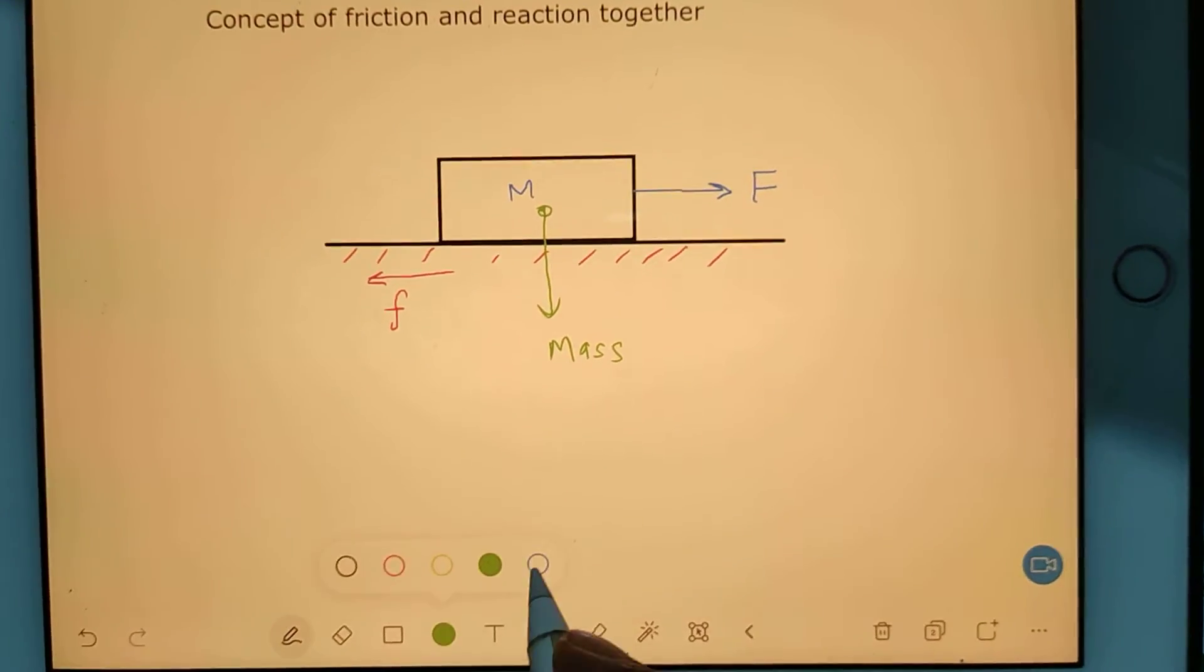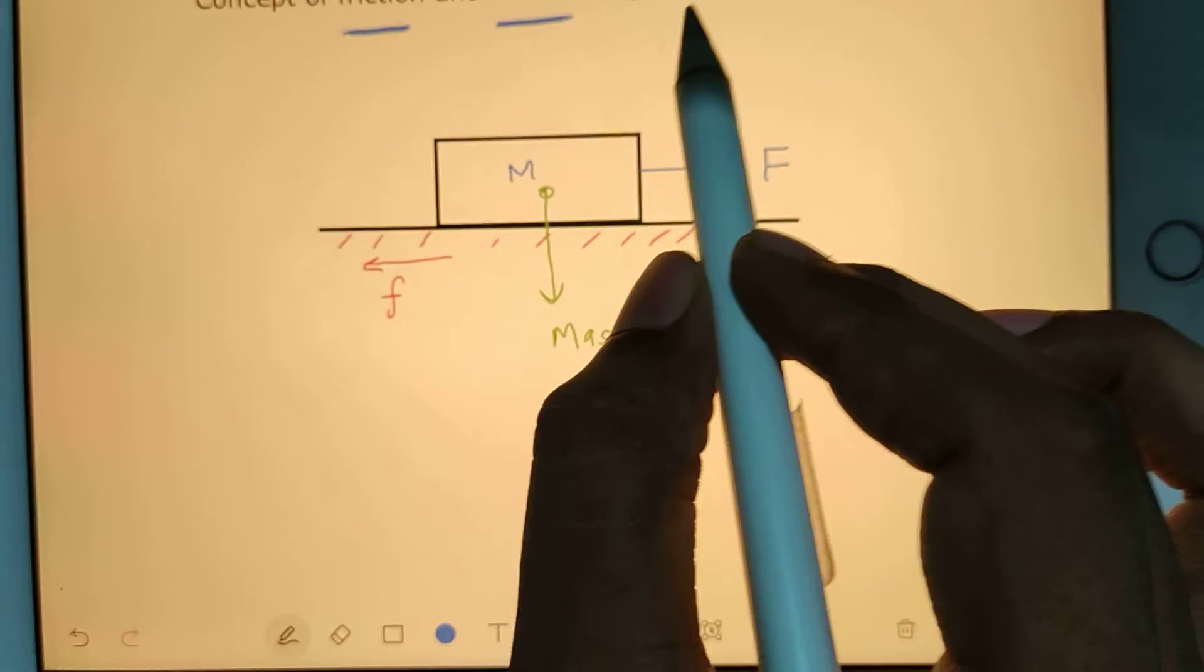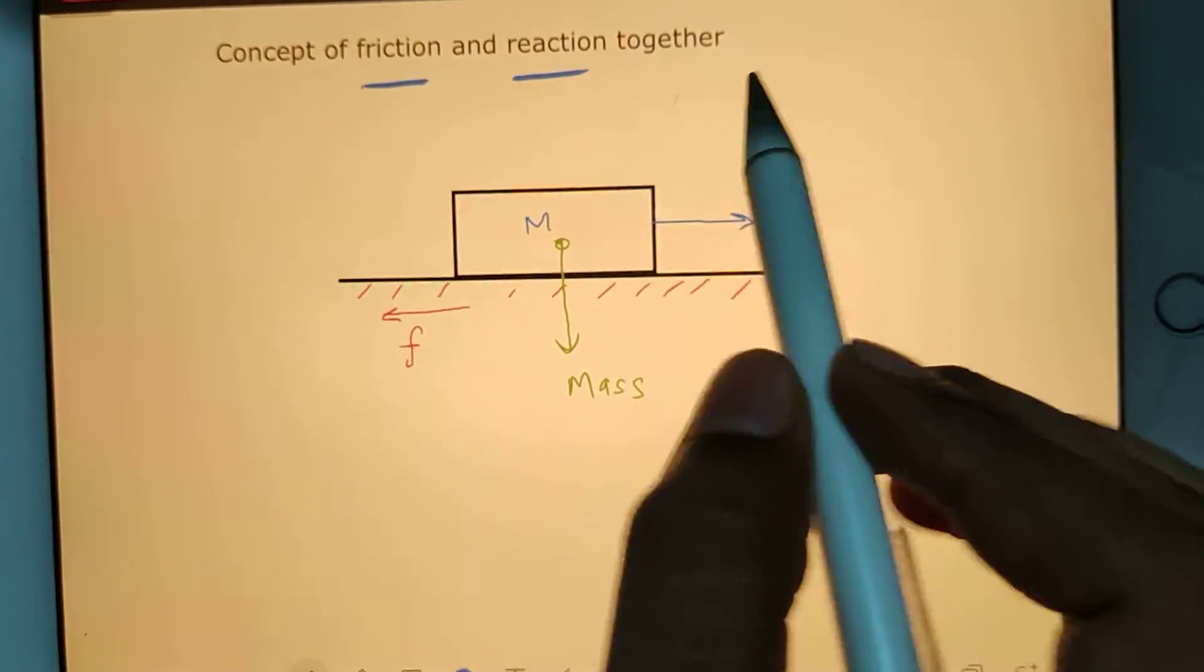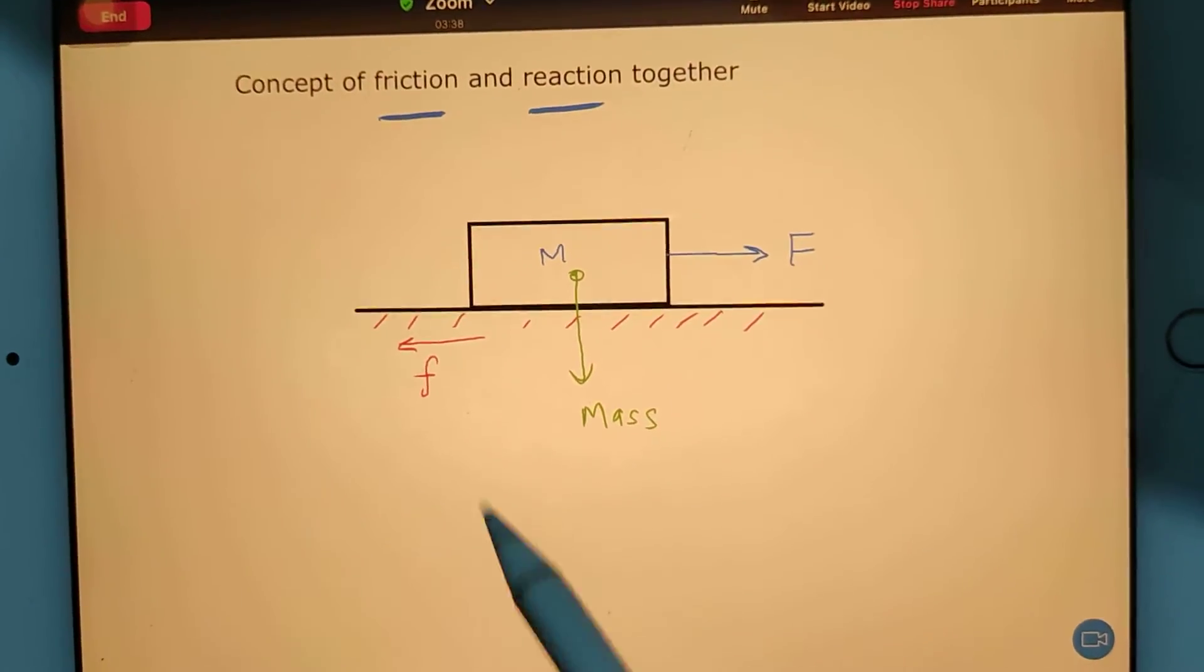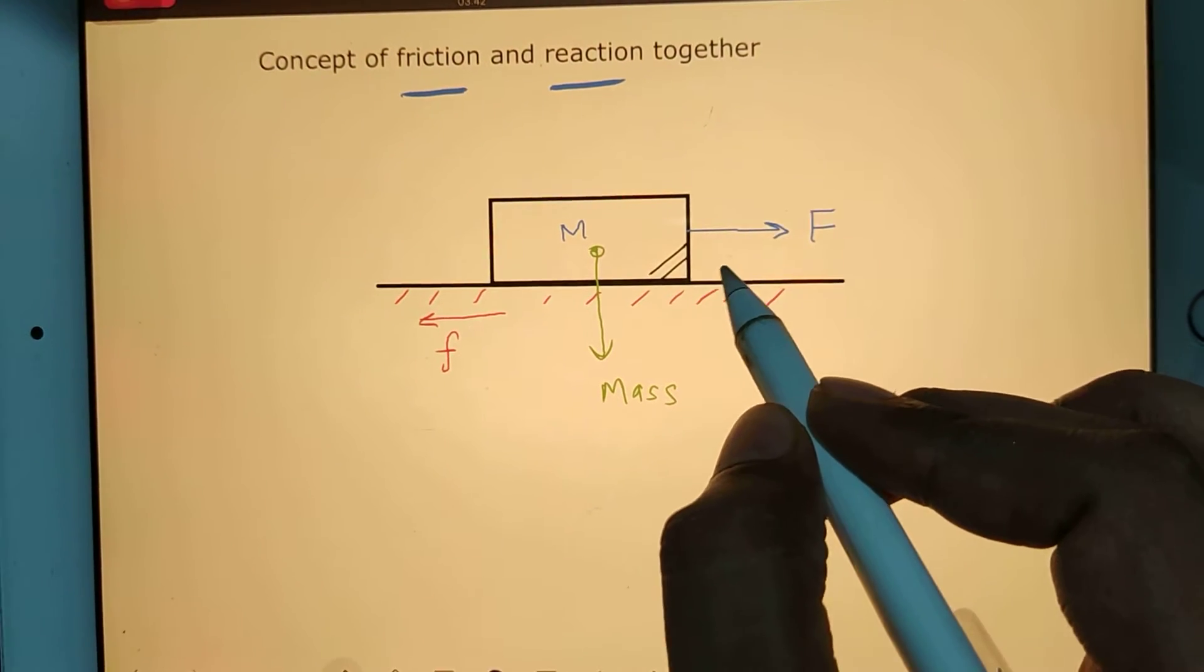We are trying to understand friction and reaction together. For that purpose, we have taken an example in which I have taken a mass M and the force F is acting on the mass. When the motion happens in this direction, we are considering the surface is having friction.